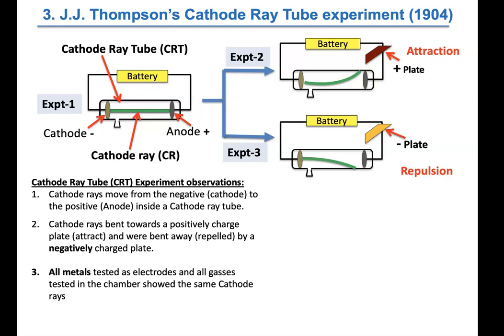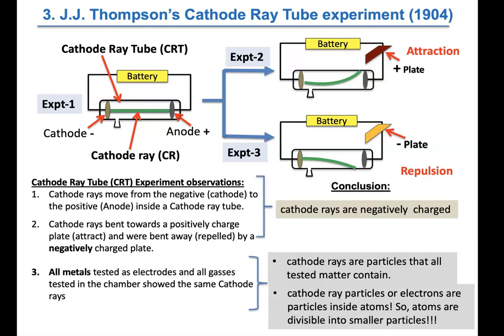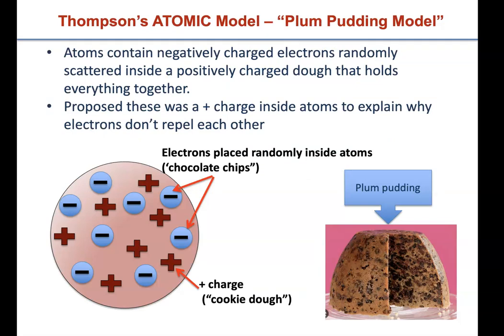For the first time, the atom was understood to be divisible into smaller particles. Thomson also realized that the cathode ray particles couldn't simply float freely inside the atom without an opposite charge, because they would repel each other since they are all negative. So he proposed the plum pudding model: the atom is like a British dessert — plum pudding or a chocolate chip cookie — where a positively charged "batter" fills the atom, and the negatively charged electrons he named are scattered randomly within it.